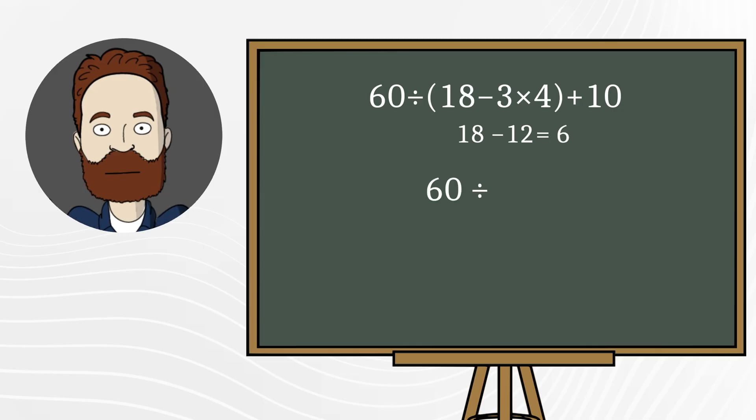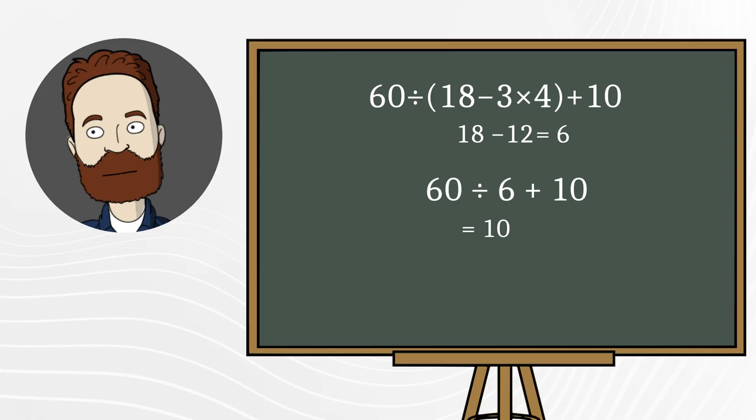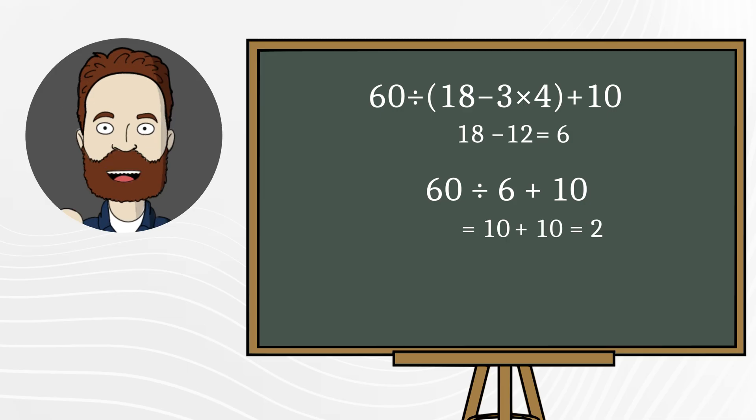Substitute the result. Now we divide. 60 divided by 6, that's 10. And what remains is addition. 10 plus 10 equals 20.